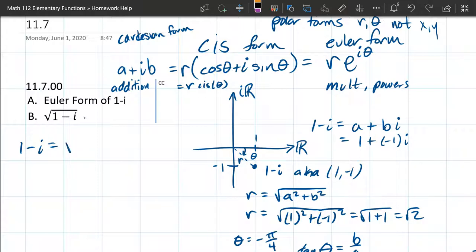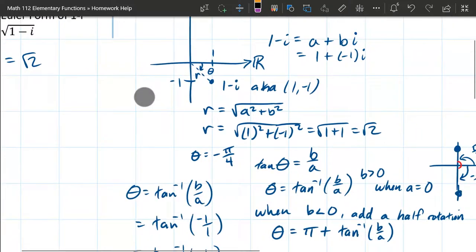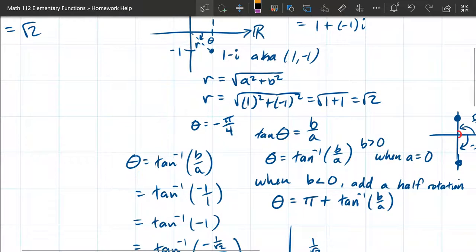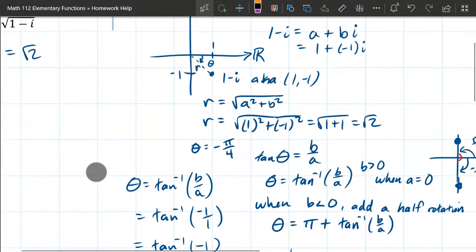So we already computed the radius with square root 2. It's all done right down here. We did the angle either by looking, because this was a nice angle, or you can do tangent inverse. So we got negative pi over 4 either way.